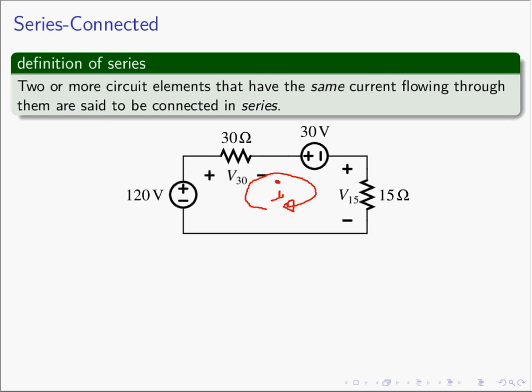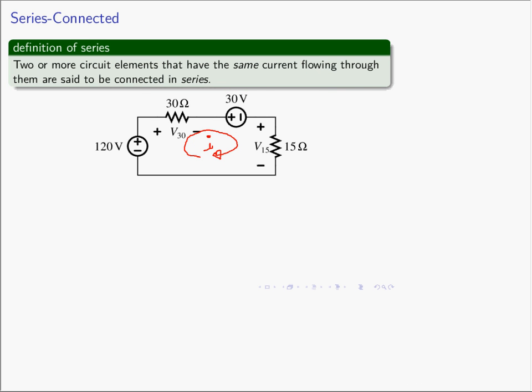When I say the same current, I mean the exact same current — the same charges flow through each of these circuit elements one after the other. Not the same amount of current, but the exact same charges. So we look at the circuit and see they're all in series. We know there's only one current. There are four circuit elements, one current, and there will be four different voltages. Let's use this circuit as an example and figure out the power absorbed in each of these circuit elements.